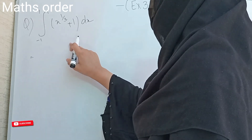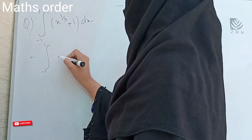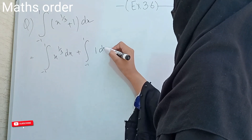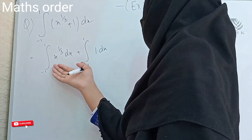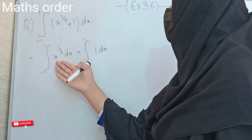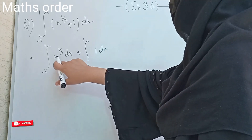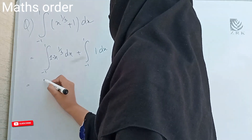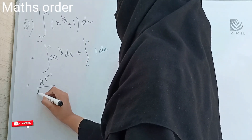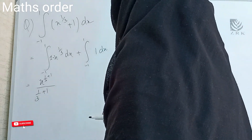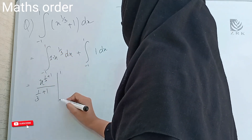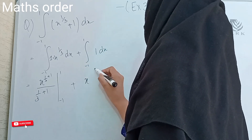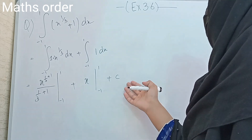The first question is the integral from minus 1 to 1 of (x^(1/3) + 1) dx. We separate out the integration: integral from minus 1 to 1 of x^(1/3) dx, plus integral from minus 1 to 1 of 1 dx. Applying the power rule: power plus 1, so 1/3 plus 1.